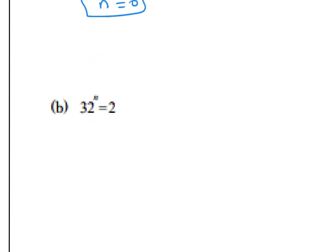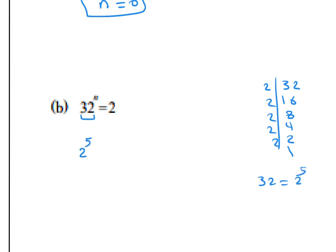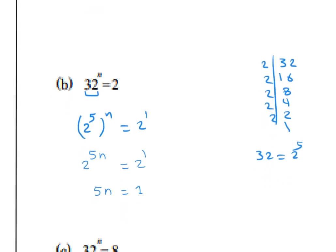Problem 12a: solve 32^n = 2. We need the same base. 32 = 2^5 (divide by 2: 16, 8, 4, 2, 1). Rewrite as (2^5)^n = 2^1. Multiply the powers: 2^(5n) = 2^1. Base equals base, so power equals power: 5n = 1, divide by 5, so n = 1/5.